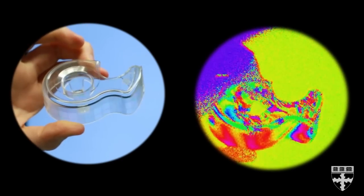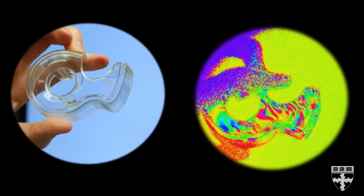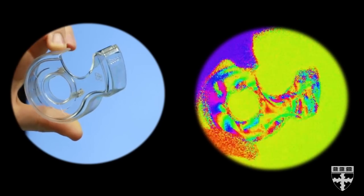Polarization is a quality of light, like color or brightness. But unlike color and brightness, our eyes can't see polarization.